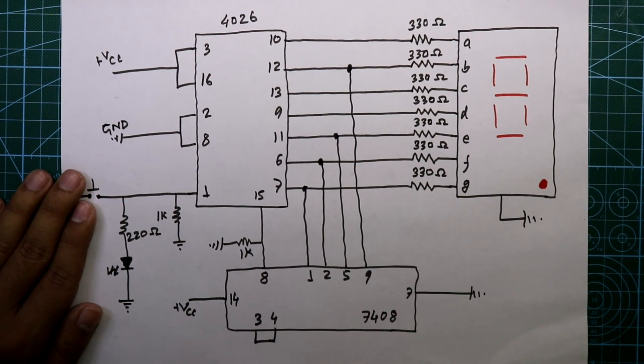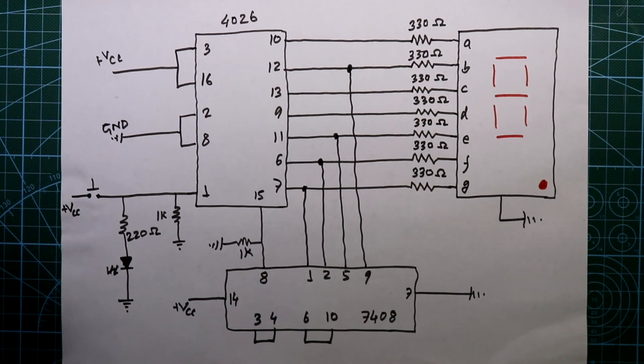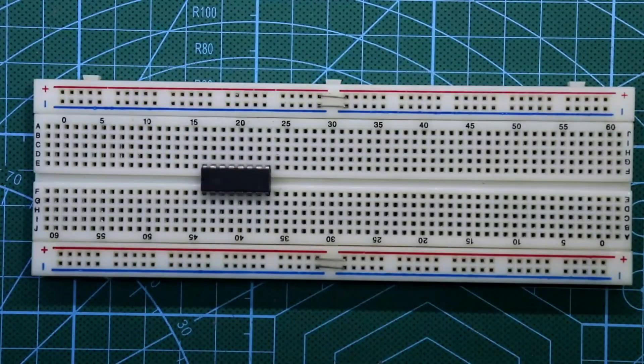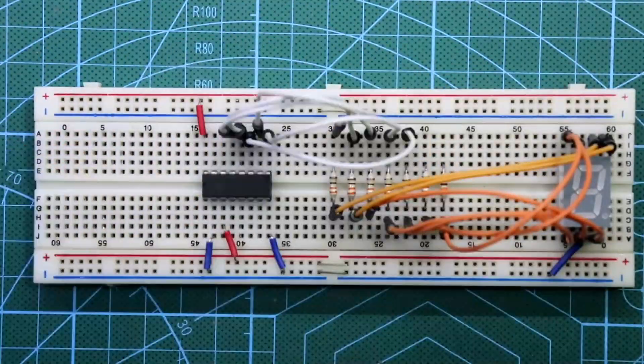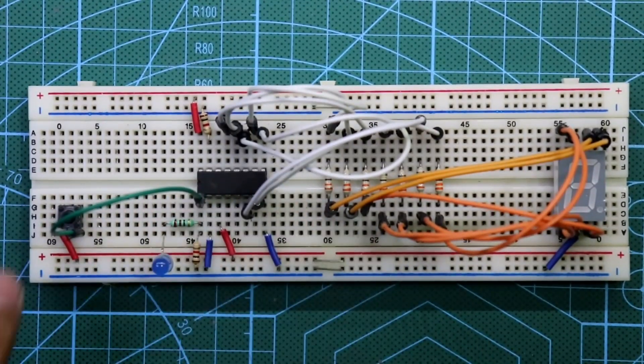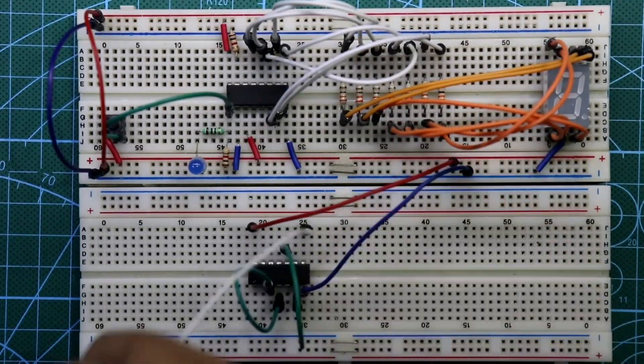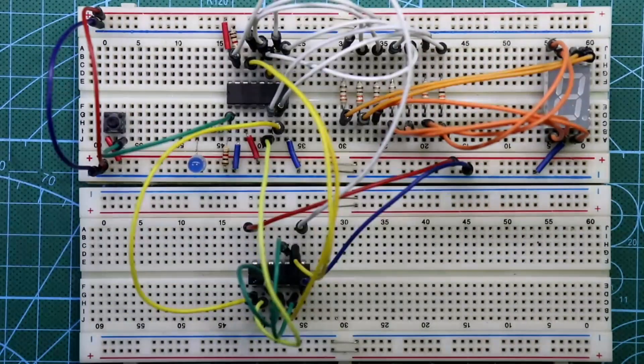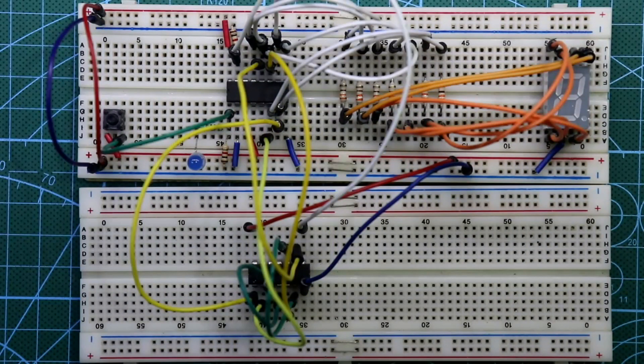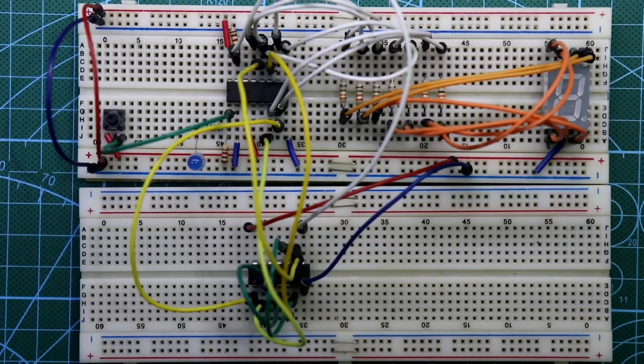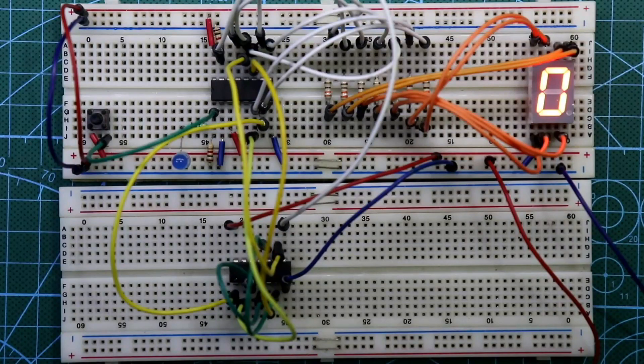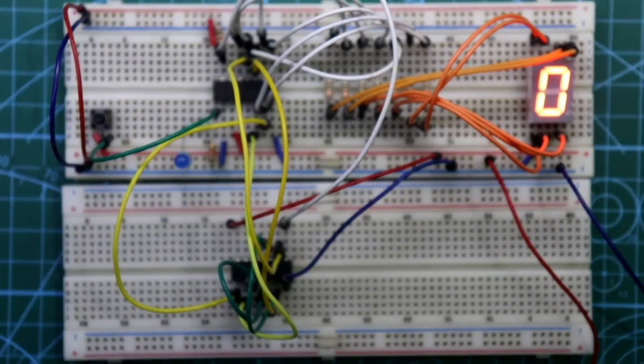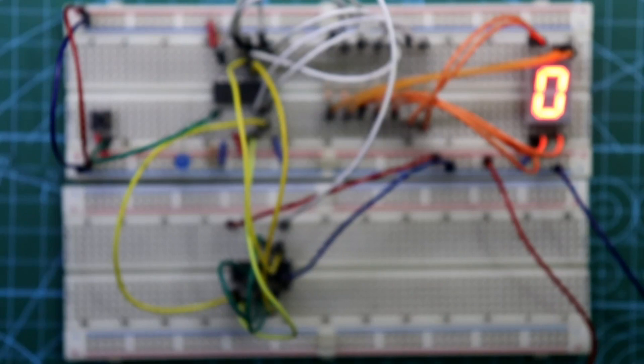So this is how we have completed our circuit connection. Now put the power supply - here is our negative and this is our positive. Now I'm adjusting the camera so you can see it better. Now see, as it is mod 8, so it will count from 0 to 7.